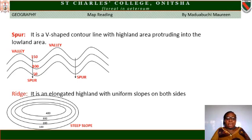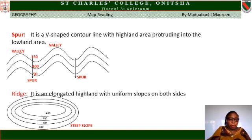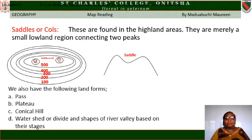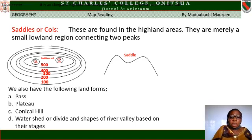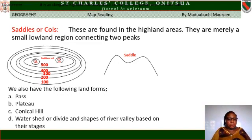Ridge. It is an elongated highland with uniform slopes on both sides. From the diagram, you can see that the contour lines are elongated. Saddles or cols are found in highland areas — they are a smaller land region connecting two peaks. From the map, at 500 the land breaks, then you have one peak here and another peak there; the gap between the two peaks is called the saddle or col. Other landforms include pass, plateau, conical hill, watershed or water divide, and shapes of valley based on their stages.